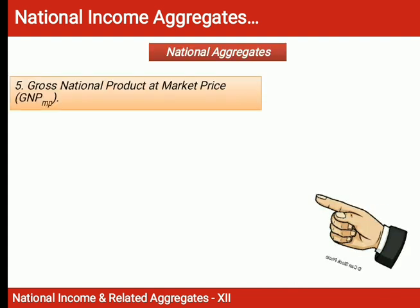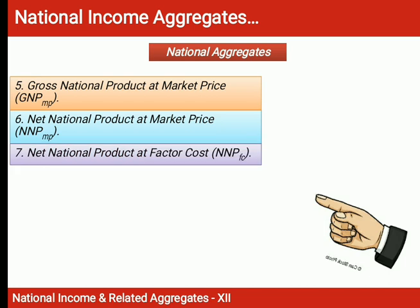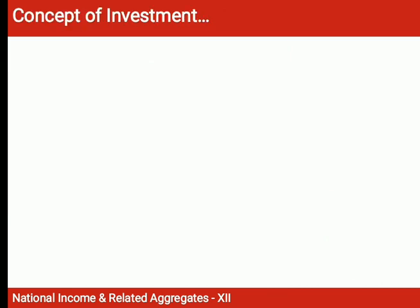The four National Income Aggregates are: GNP MP, NNP MP, NNP FC, and GNP FC. These four are the national aggregates.